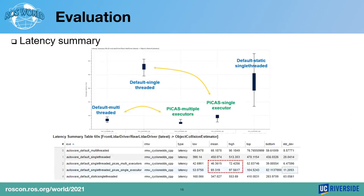This slide shows the measurement of latency for the hot topic path, from the front/rear LiDAR driver to the object collision estimator. Comparing PICAS single executor to the ROS2 default single-threaded executor, the mean and max numbers in the table show that PICAS single executor significantly outperforms ROS2 default single-threaded executor. This is because under PICAS, chains are prioritized based on criticality, so the most critical chains run first. In comparison between PICAS multiple executors and ROS2 multi-threaded, PICAS also has slightly better latency performance.